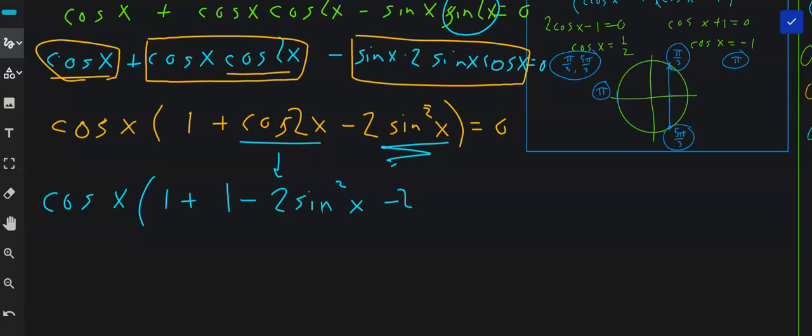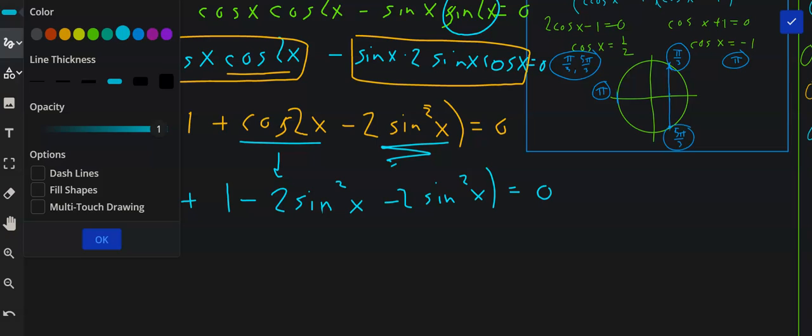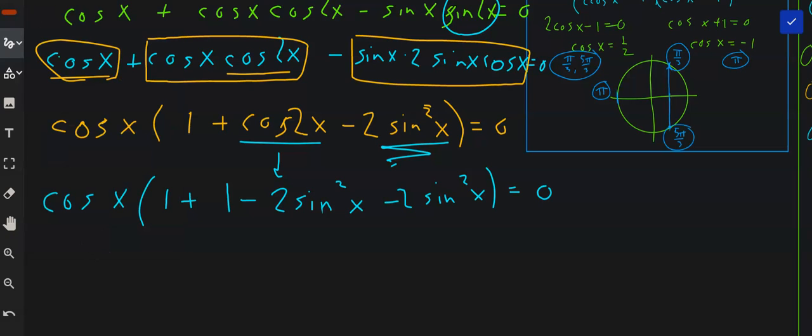So we can add like terms here. Those add up to 2 minus 4 sine squared x times cosine x equals 0.